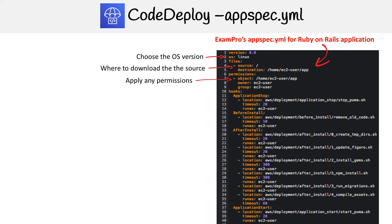Then we have our hooks. We have an ApplicationStop — this command should be responsible for doing the stop. We're providing a location to a bash file. The way the appspec YAML works is you write bash scripts for all of them, and then you specify them with paths inside the zip that is provided to CodeDeploy. So the appspec YAML will be in the zip, and all these script files will also be in that zip.